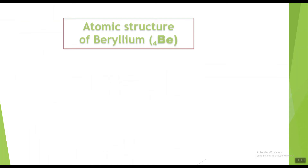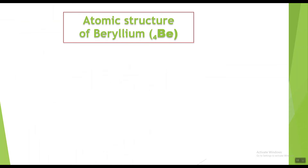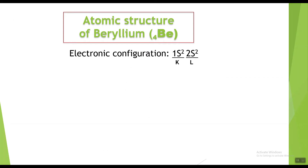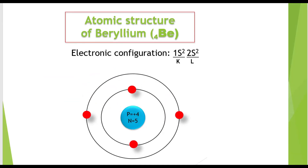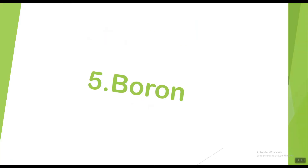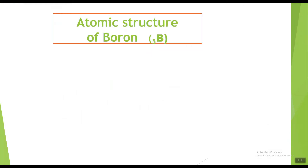Now beryllium. The symbol for beryllium is Be with atomic number 4, showing it has four electrons. The electronic configuration of beryllium is 1s2 2s2, showing two electrons in the K shell and two electrons in the L shell. The atomic structure of beryllium shows four protons and five neutrons in the nucleus, with two electrons in the K shell and two electrons in the L shell.